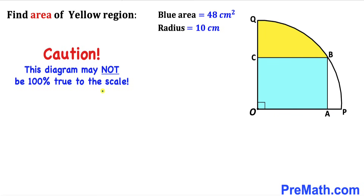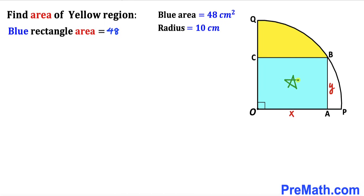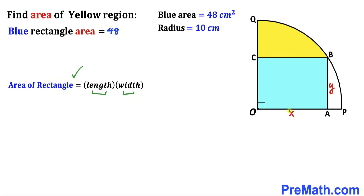Please keep in mind that this figure may not be 100% true to scale. Here's our action plan: before we do anything else, we must find the length and width of this blue rectangle. We'll label the length as x and the width as y. We know the area of the rectangle is 48, so using area equals length times width, we get x times y equals 48. We'll call this equation 1.